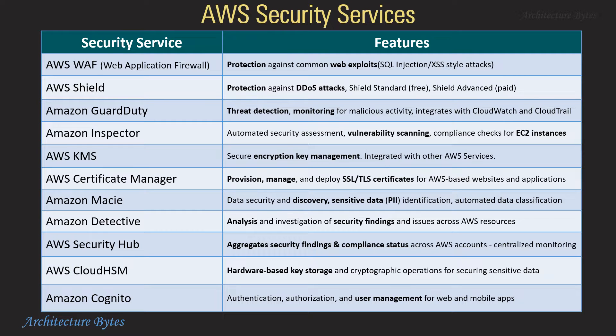Amazon Detective is used to analyze and investigate security findings. AWS Security Hub aggregates security findings. Cloud HSM is a hardware-based key storage. Amazon Cognito provides authentication, authorization, and user management for web and mobile apps.